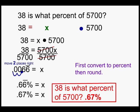But then we're going to round it because the line above the six means it repeats. So 38 is what percent of 5700? 0.67 percent.